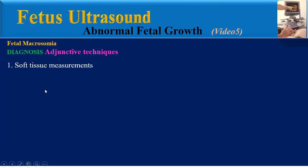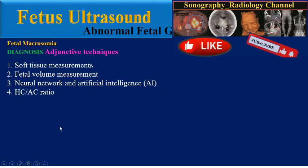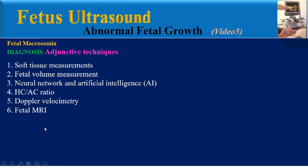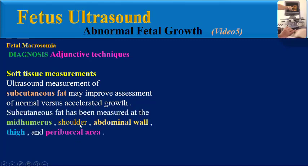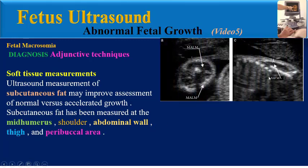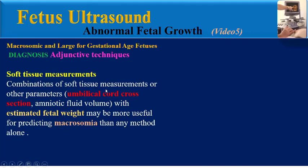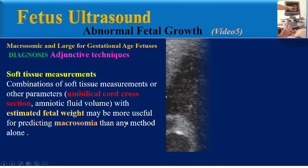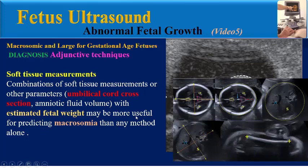Adjunctive techniques in diagnosis include soft tissue measurements, fetal volume measurement, neural network and artificial intelligence, HC-AC ratio, Doppler velocimetry, and fetal MRI. Regarding soft tissue measurements: ultrasound measurement of subcutaneous fat may improve assessment of normal versus accelerated growth. Subcutaneous fat has been measured at the mid humerus, shoulder, abdominal wall, thigh, and peribuccal area. Combination of soft tissue measurements or other parameters like umbilical cord cross-section and amniotic fluid volume with estimated fetal weight may be more useful for predicting macrosomia than any method alone.